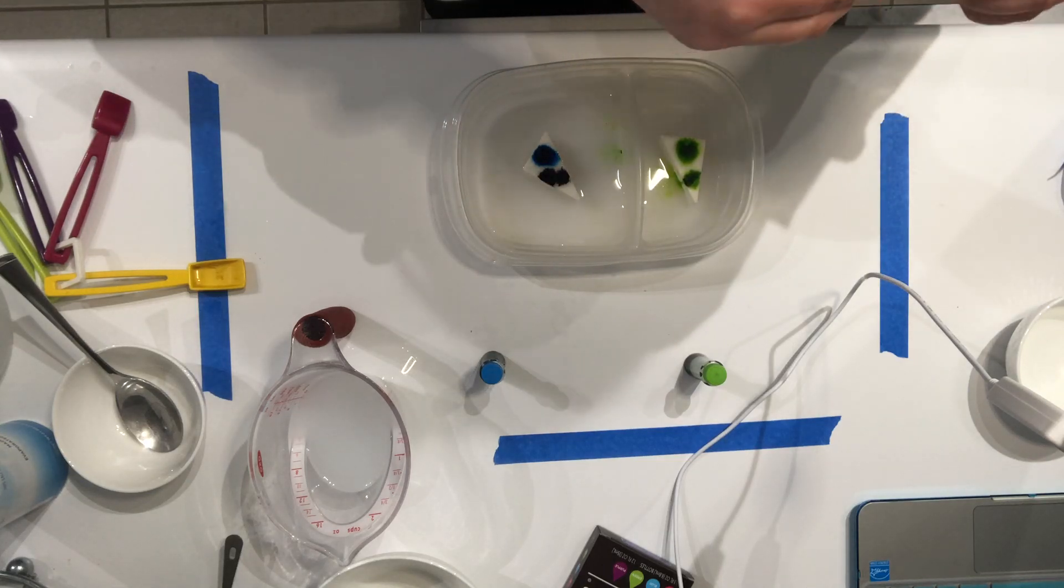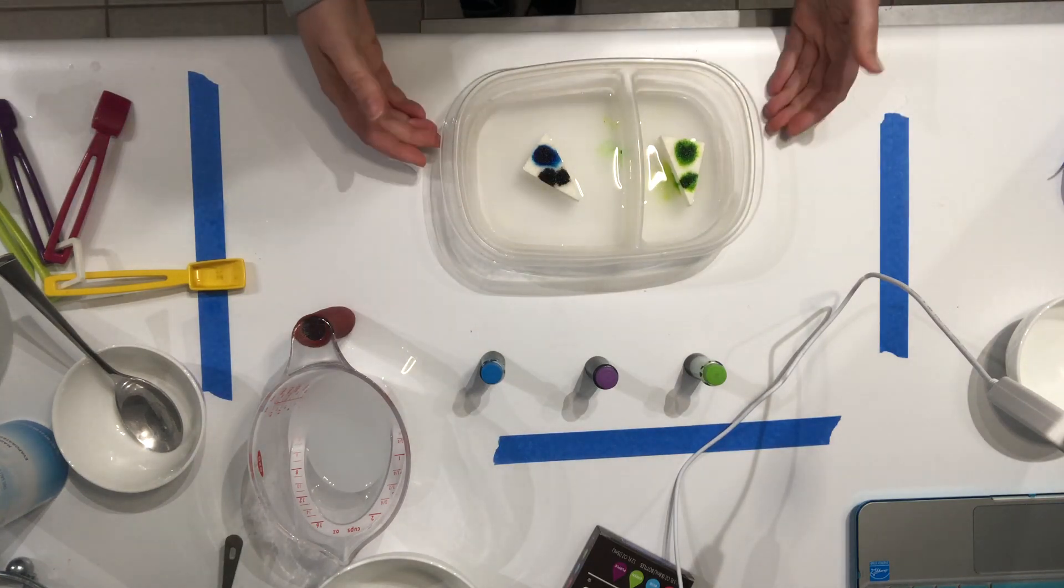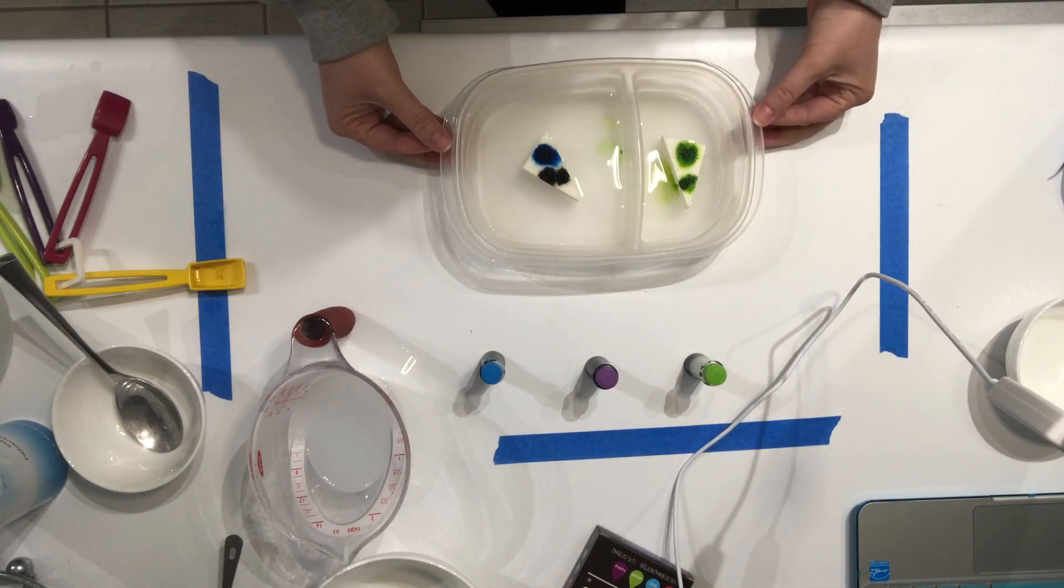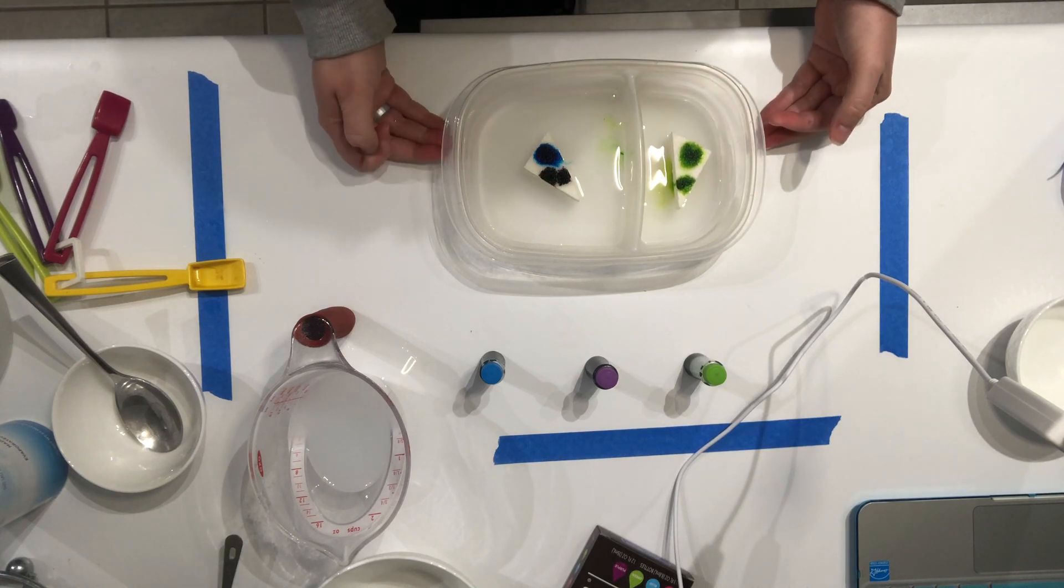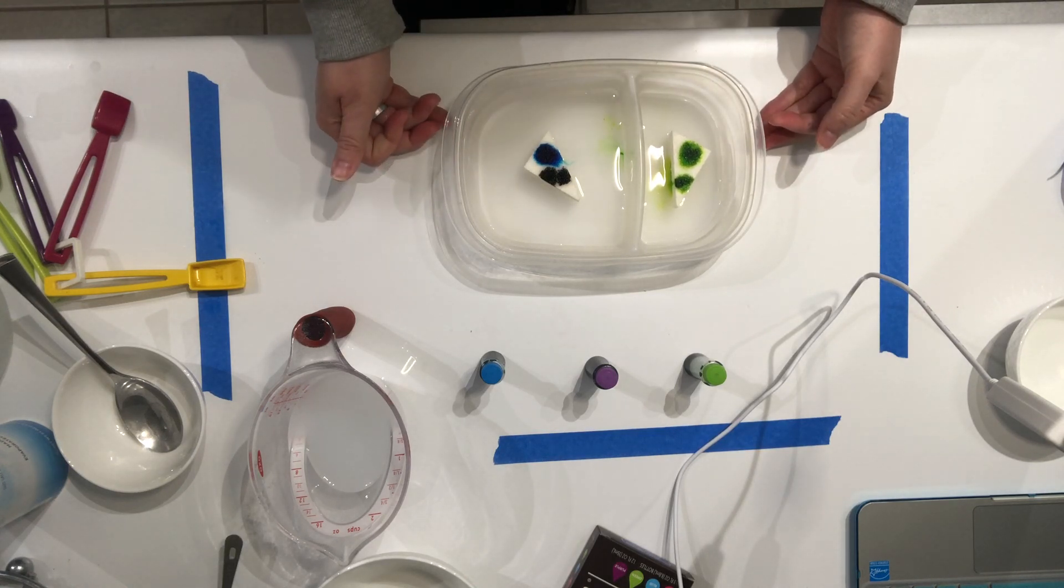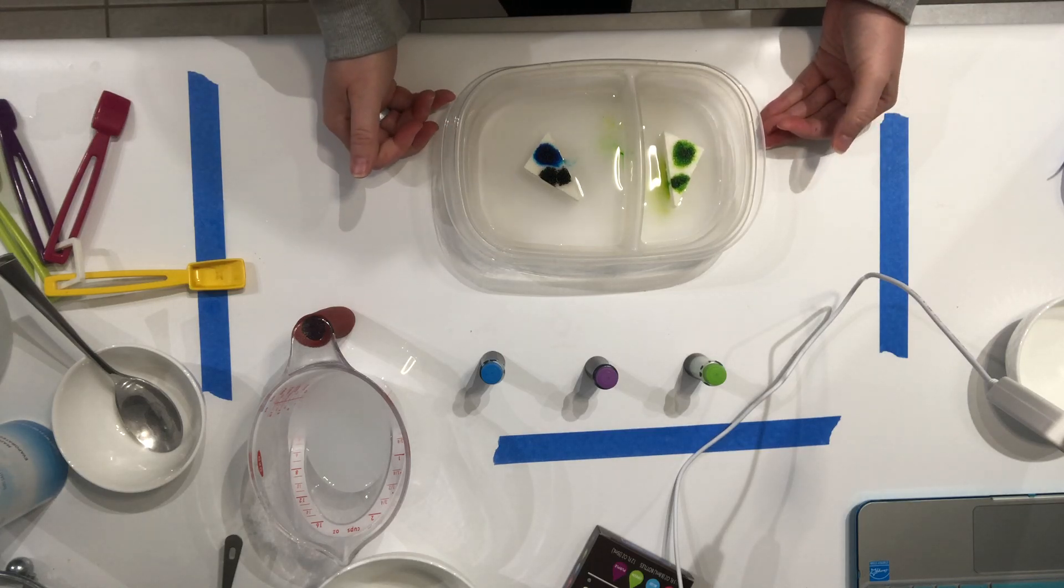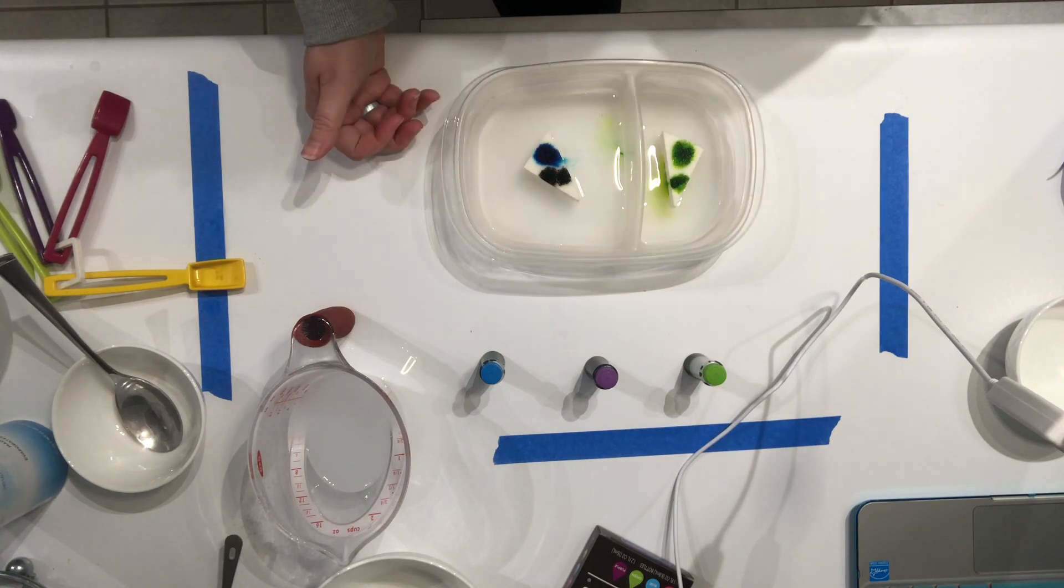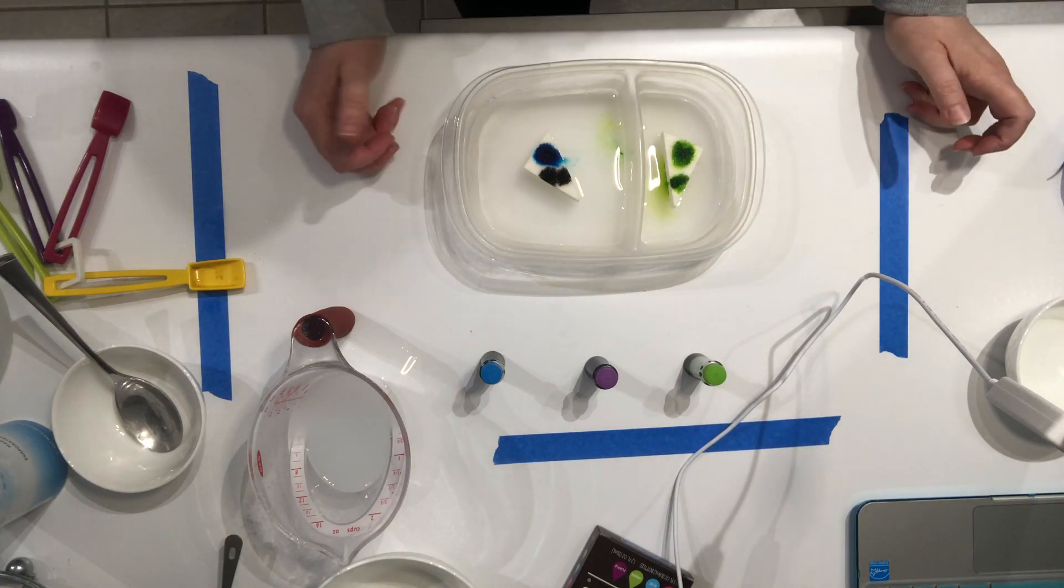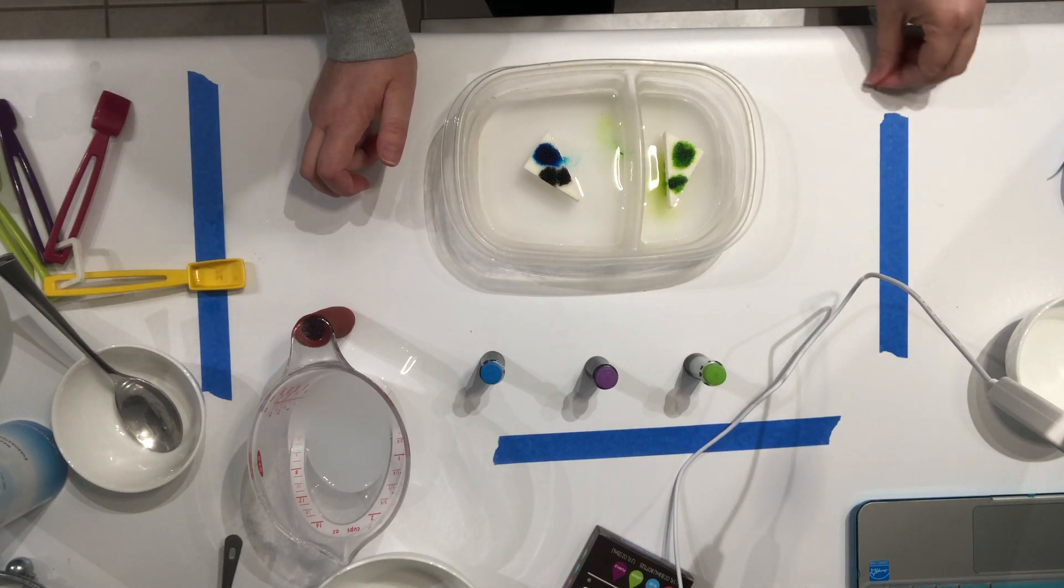All right, so then we want to set our dish in a sunny, warm place where it's going to get good air circulation. And overnight into tomorrow, we should start to see some crystals growing. We can let them grow for a couple of days. You guys can take pictures and share them with me and Mr. Smith. We would love to see how your experiment turns out.